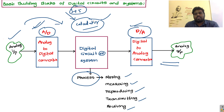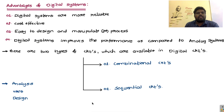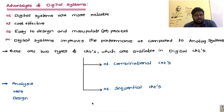The calculator processes data through basic computations like addition, subtraction, division, and multiplication. This is about the basic building blocks of digital circuits and systems. Digital systems have certain advantages over analog systems: they are more reliable, cost effective, easier to design, and they improve performance compared to analog systems.